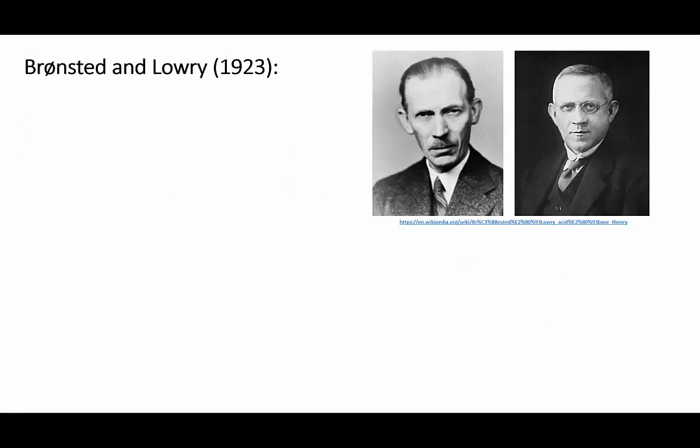In 1923, the Danish chemist Johannes Bronsted and the English chemist Thomas Lowry independently came up with new definitions for acids and bases, and their definitions are more closely tied to how acids and bases react.